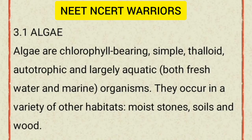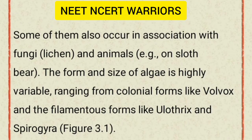Algae are chlorophyll-bearing, simple, thaloid, autotrophic and largely aquatic — both freshwater and marine organisms. They occur in a variety of other habitats including moist stones, soils and wood. Some of them also occur in association with fungi in lichen and with animals.